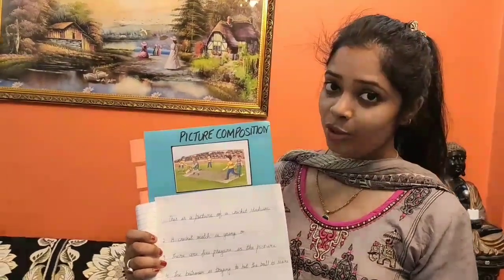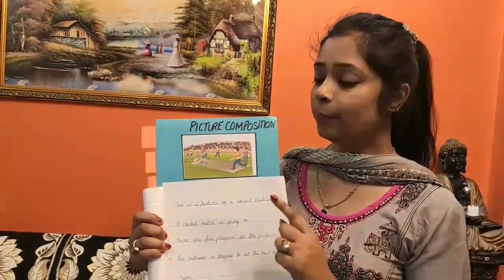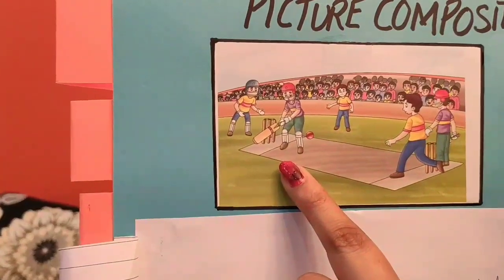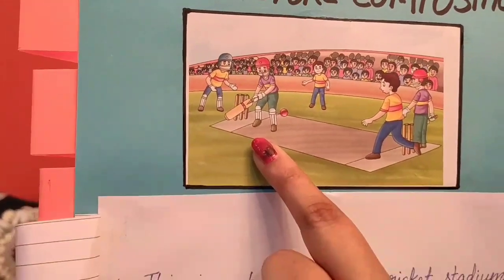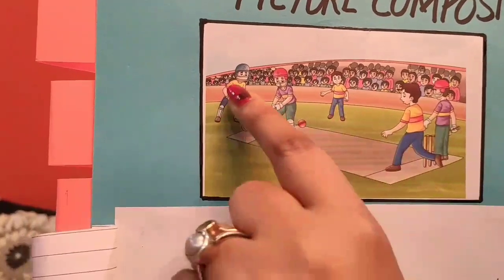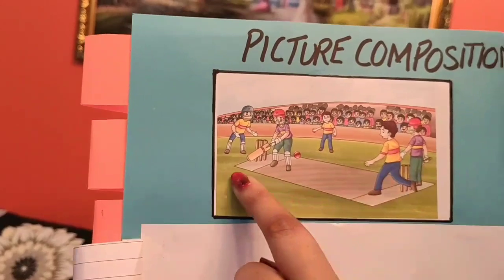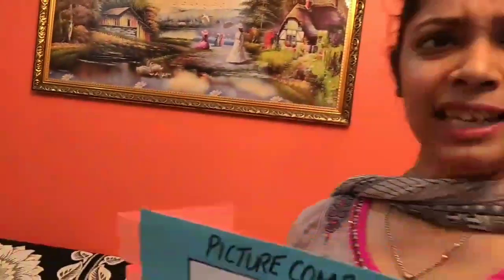You can also talk about the emotions of the characters in the picture. For example: the batsman seems stressed, the crowd is enjoying the match, or the players are having fun. Isn't it easy to frame five sentences on a given picture? Now let's look at another scenario and try to frame five sentences on it, just like I taught you.